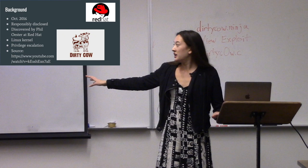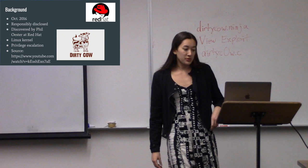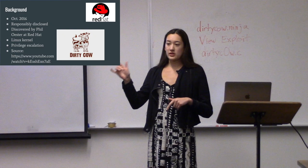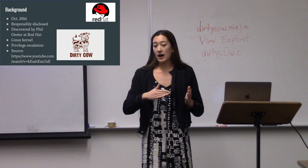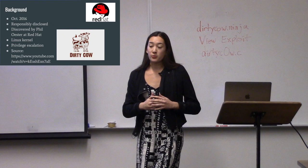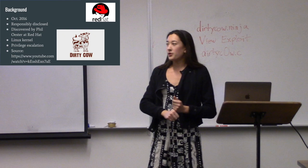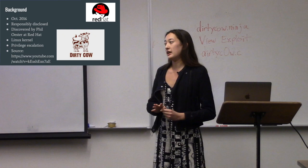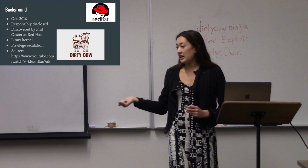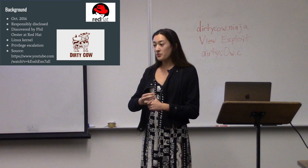A little bit of background about the vulnerability: it was discovered back in October 2016, about two years ago. It was responsibly disclosed, which means it was revealed to the software distributors who could patch it before it was revealed to the general public. This was especially important because it was a relatively simple exploit. It was discovered by Phil Oster at Red Hat, a company that works on open source Linux distributions. He actually discovered it and found it in an HTTP packet, which means someone actually used this exploit before it was patched — it was found in the wild, which is kind of terrifying.